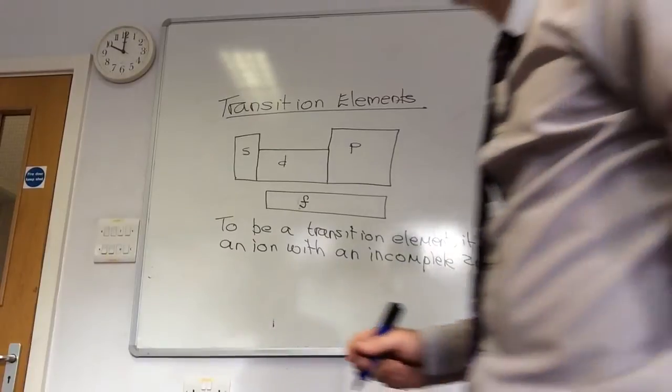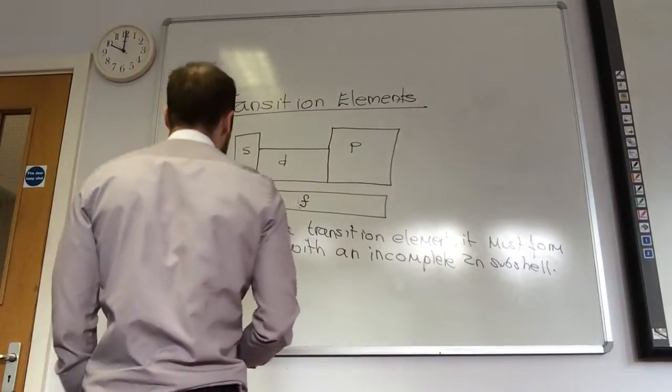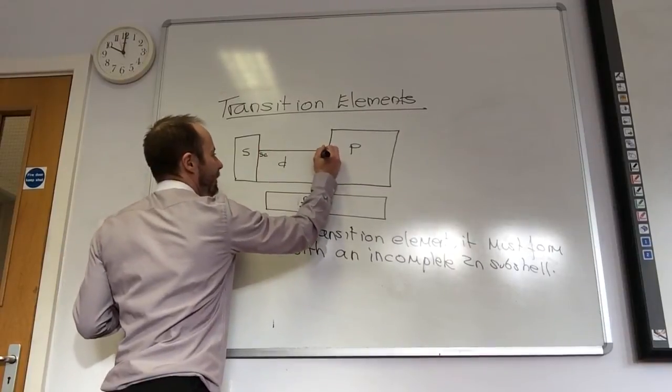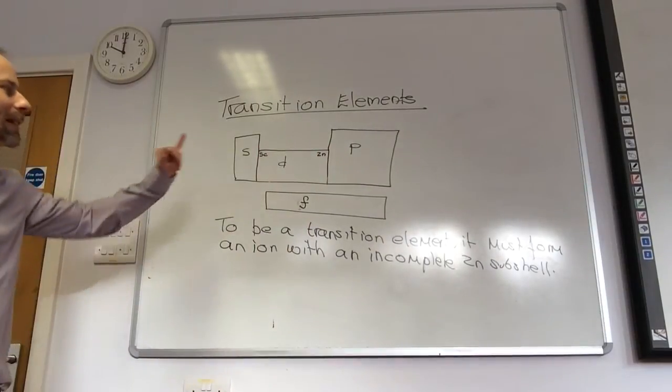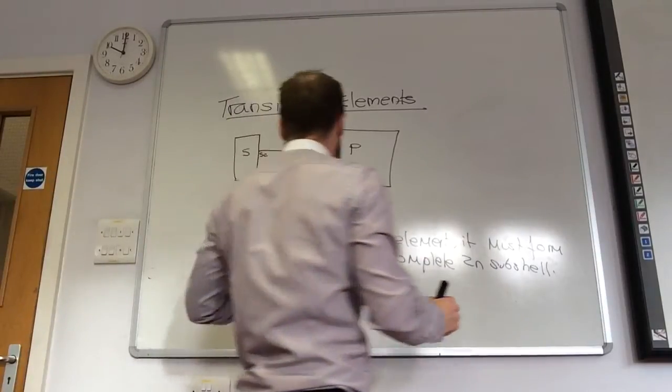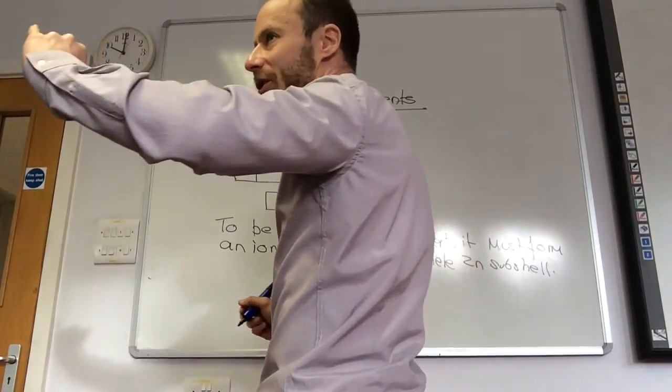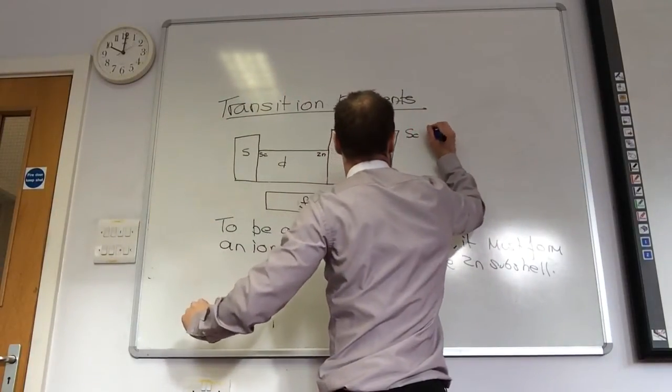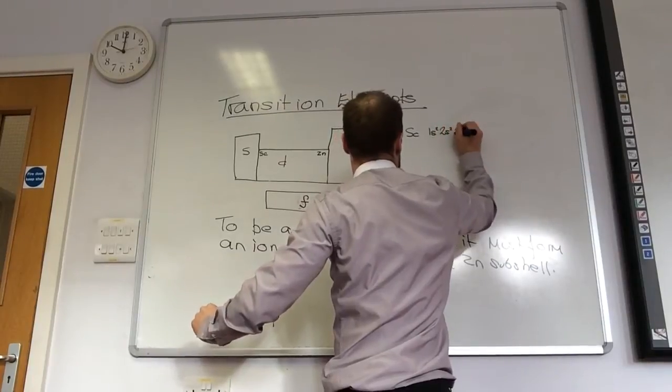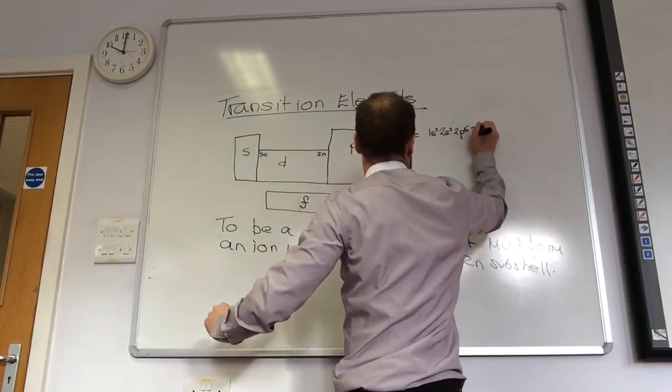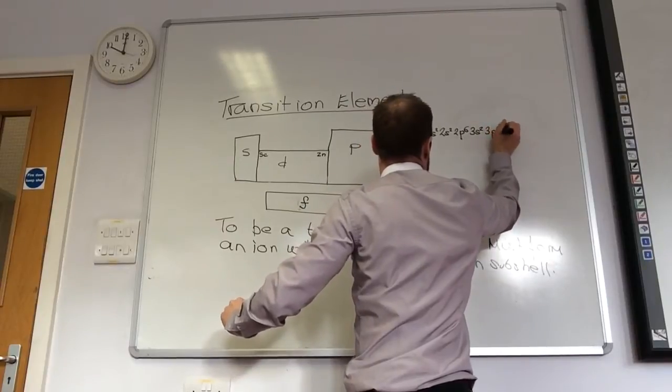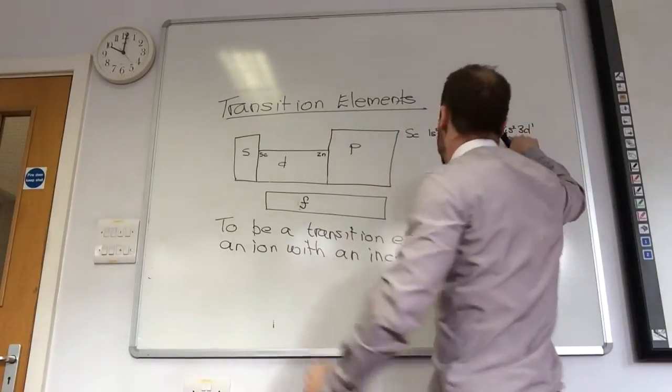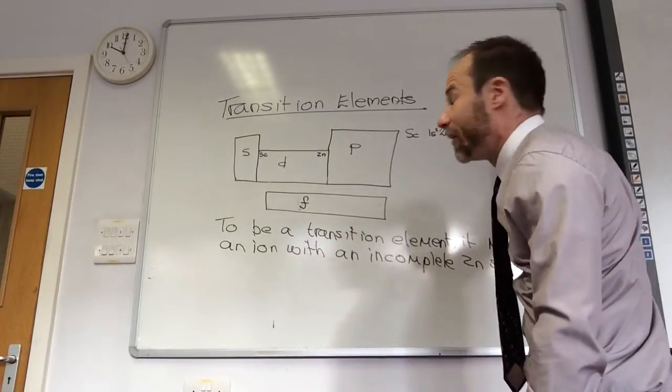So, therefore, if we have a little look, the first guy here is Scandium, and the last guy there is Zinc. Scandium only forms—well, let's do the electronic configuration of Scandium. Scandium is going to be 1s2, 2s2, 2p6, 3s2, 3p6, 4s2, 3d1. I hope we fill the 4s before the 3d.